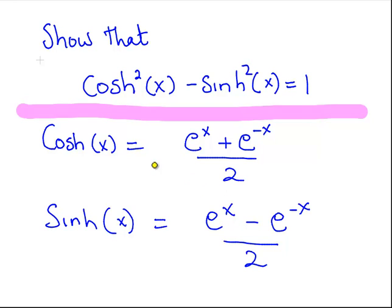cosh of x is equal to e to the x plus e to the minus x over 2. Just for the sake of simplicity, I'm going to rephrase that a little bit. I'm going to put them over 2 separately.